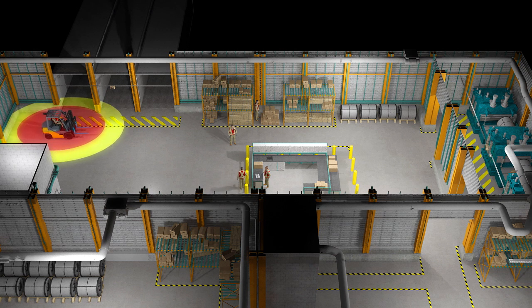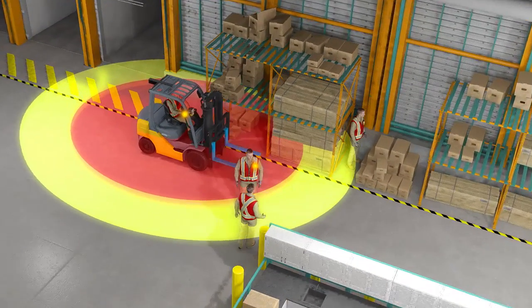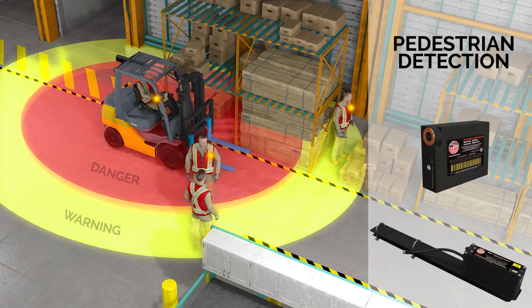The HITNOT magnetic fields are adjustable and create two precise zones, warning and danger. Users benefit from the audible and visual alerts given simultaneously to both the pedestrian and the mobile equipment operator.